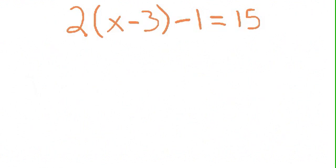Now let's work an example that puts it all together. 2 times the quantity x minus 3 minus 1 is equal to 15. First we're going to simplify both sides. I know that the 2 can be multiplied into the parenthesis to give us 2x minus 6. That's the parenthesis part. The minus 1 just stays where it is, is equal to 15.